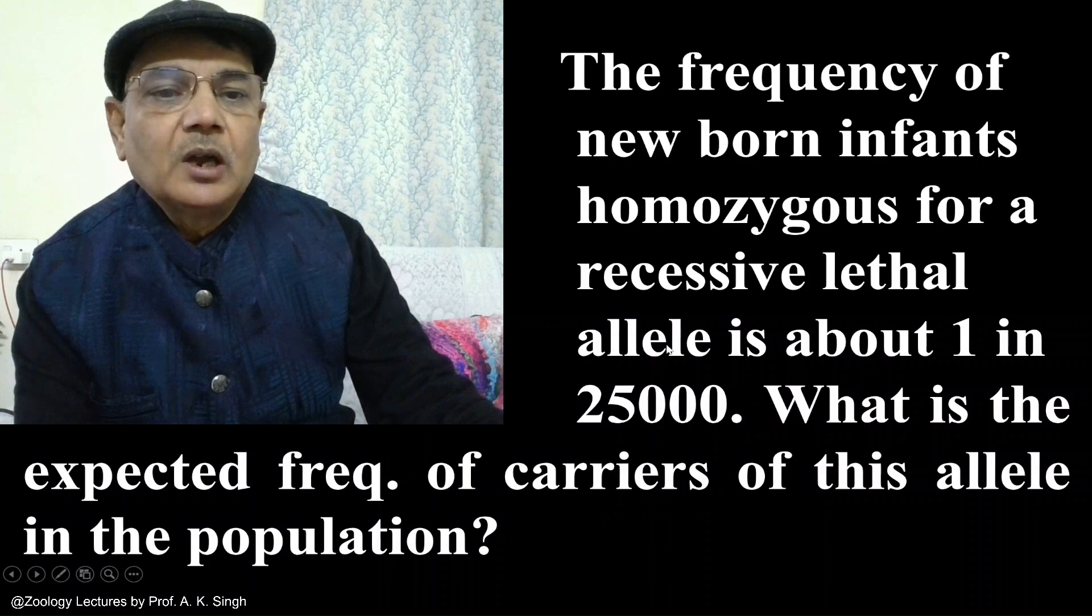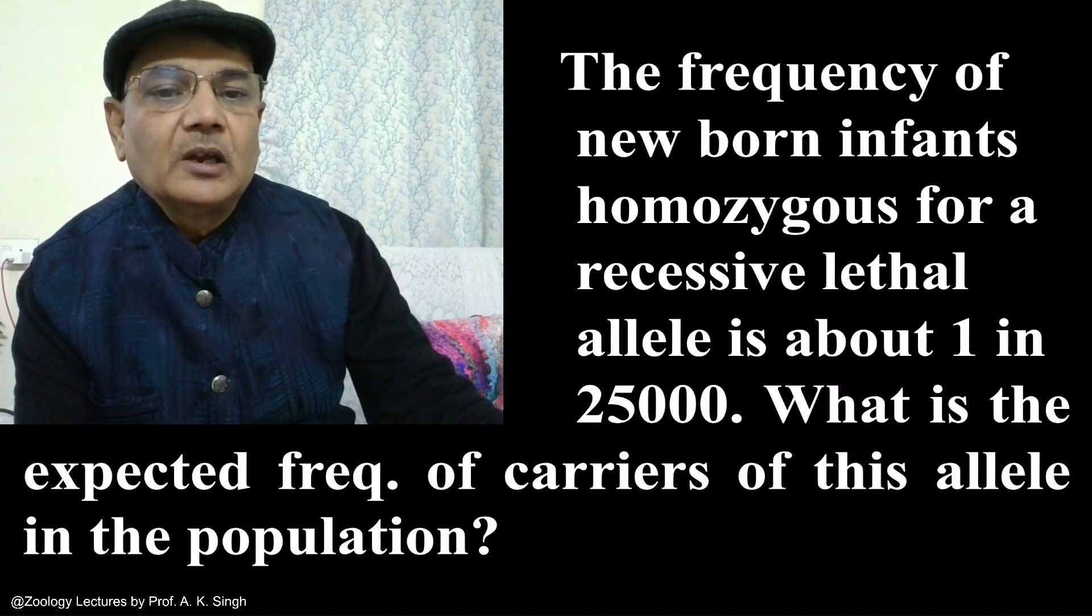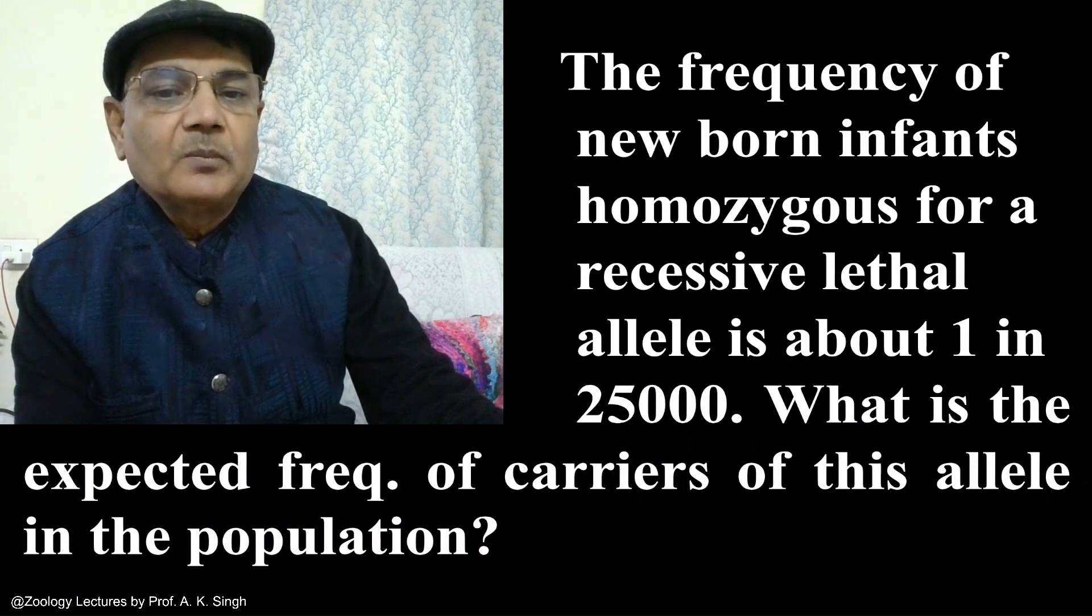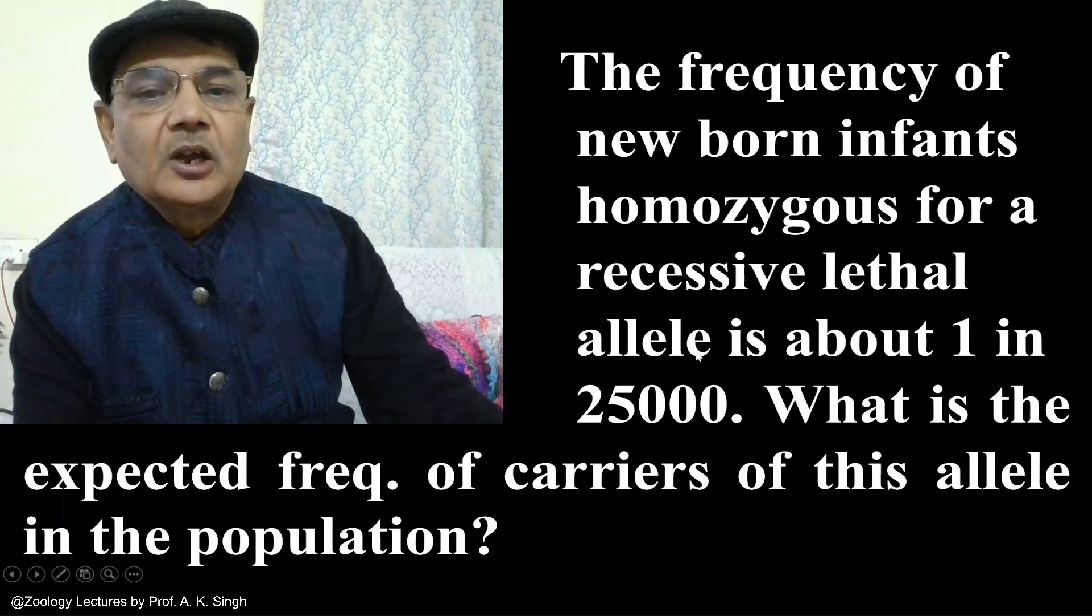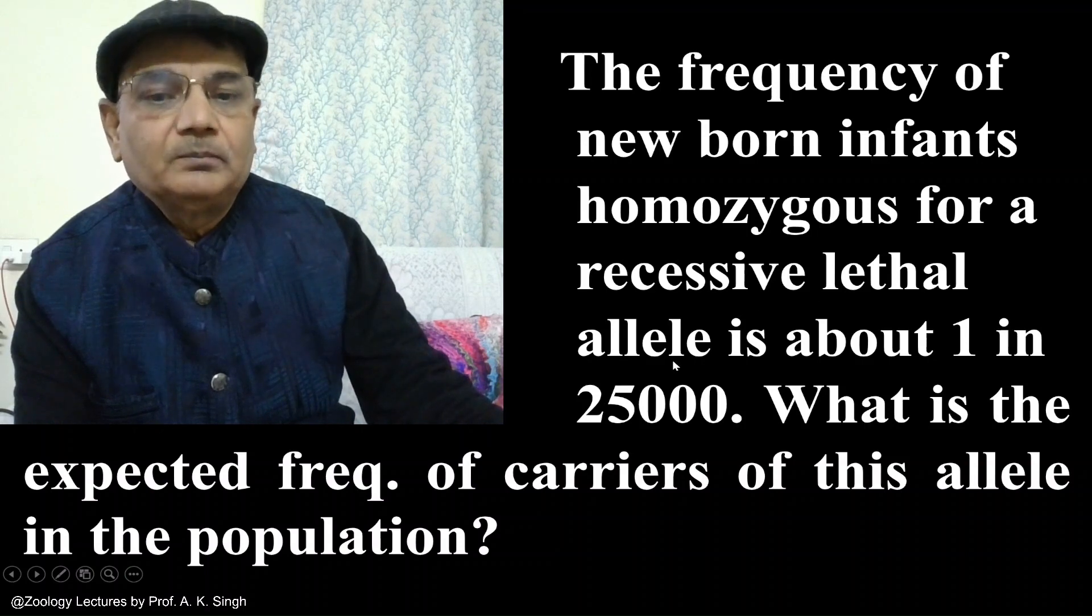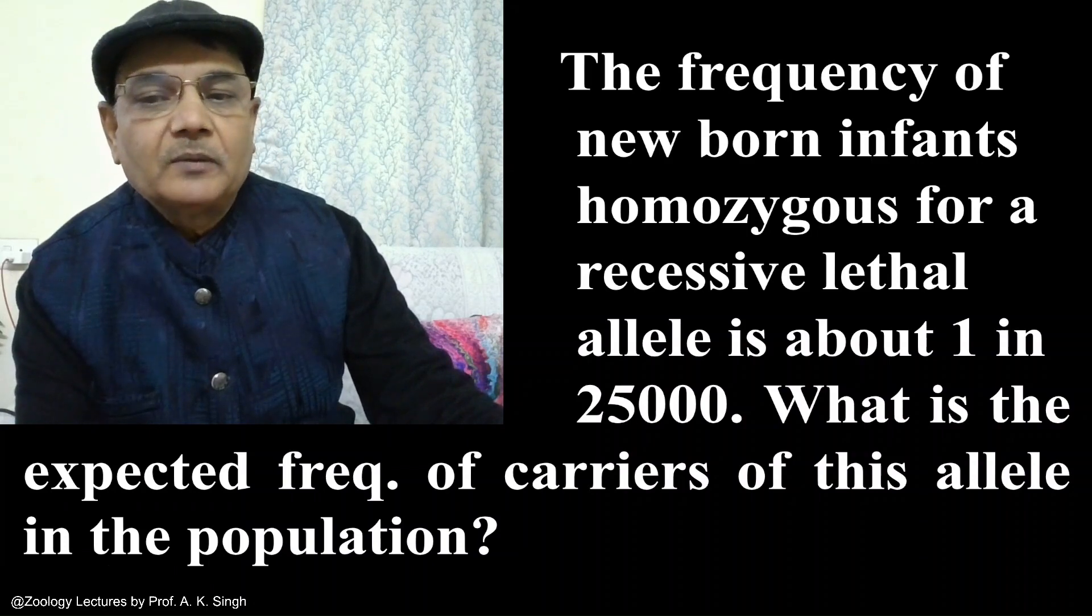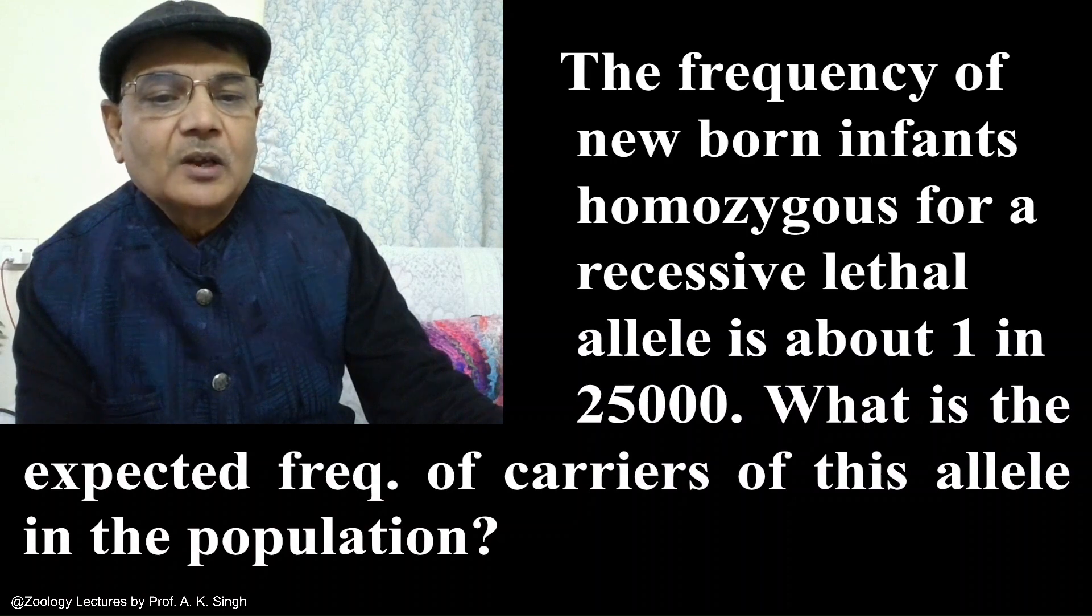One individual out of 25,000 is carrying the homozygous recessive lethal allele. It means such individuals don't survive, or they might be having some severe problem. So the frequency of such homozygous recessive lethal allele is 1 out of 25,000. What would be the number of expected carriers in this population? We can understand by calculating it.